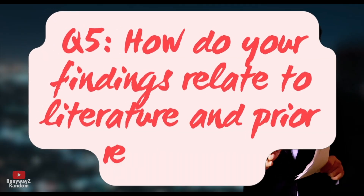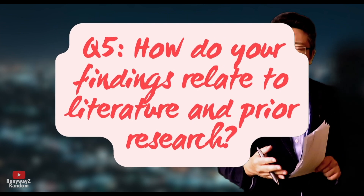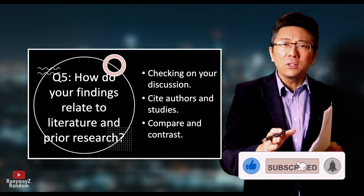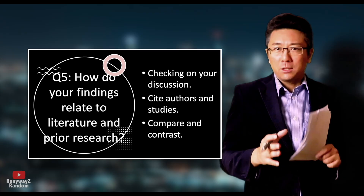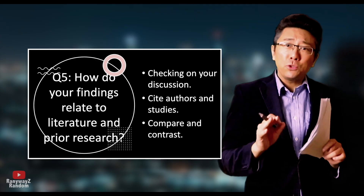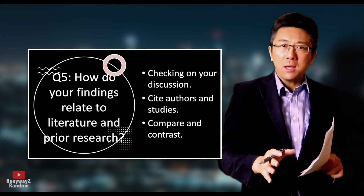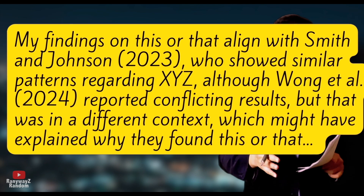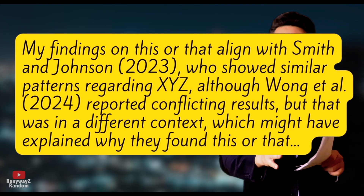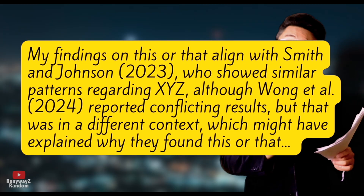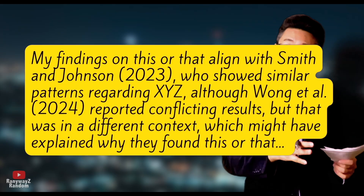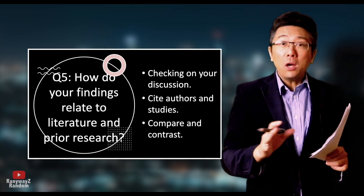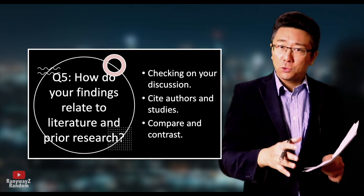Question number five: how do your findings relate to existing research, or how do your results relate to literature and prior research? This is checking on your discussion and theoretical implications. They want to know whether you can engage in a scholarly conversation by putting your work in the broader context of research on the topic. The most important thing here is to use citations and references — mention sources, key authors, names, and important work. Say something like: 'My findings strongly align with Smith and Johnson 2023, who showed similar patterns regarding XYZ. Although Juan et al. 2024 reported conflicting results, that was in a different context, which might explain the difference.' Being able to refer to authors by name adds credibility not only for theoretical discussion questions, but also for questions on your introduction and literature review.